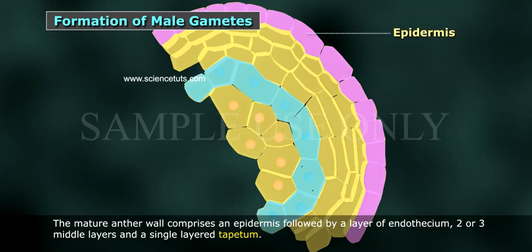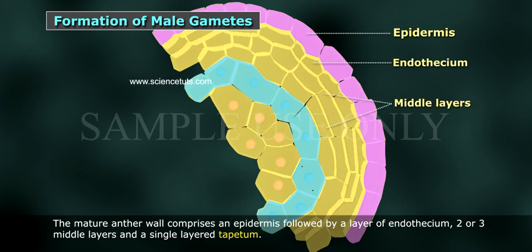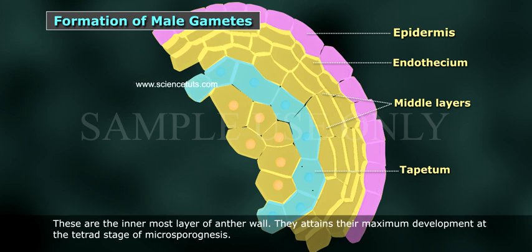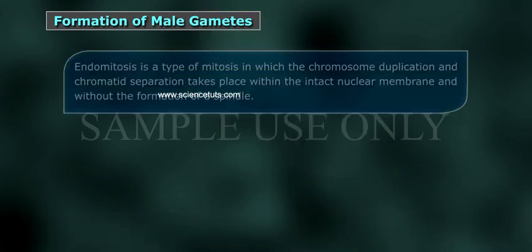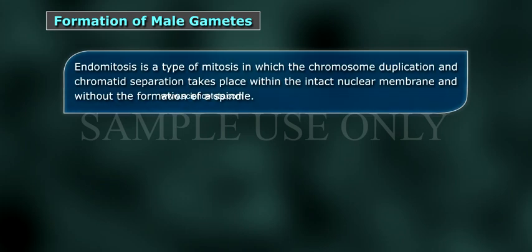The mature anther wall comprises an epidermis, followed by a layer of endothecium, two or three middle layers, and a single layer of tapetum. The tapetum is the innermost layer of the anther wall. It attains its maximum development at the tetrad stage of microsporogenesis, surrounding the sporangia tissue completely. It has considerable physiological importance because all the food materials of the sporangia tissue must pass through it.